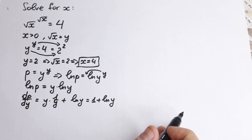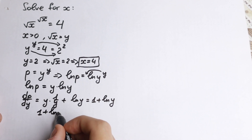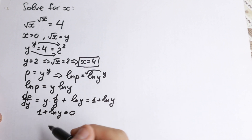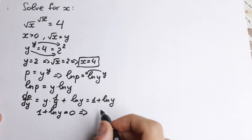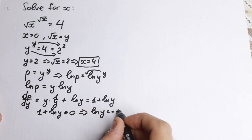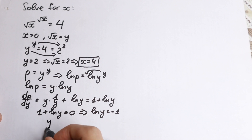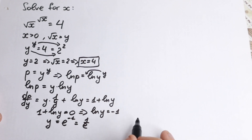We're interested in the point of minimum or maximum, so we set the derivative equal to zero: 1 plus ln(y) equals 0. Bringing the 1 to the right-hand side gives ln(y) equals minus 1, so y equals e to the power minus 1, which is 1 over e. This gives us our critical point.